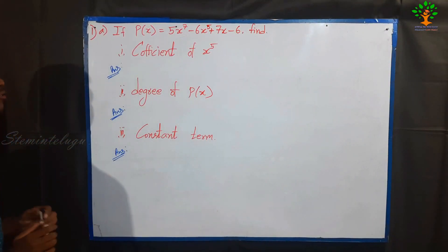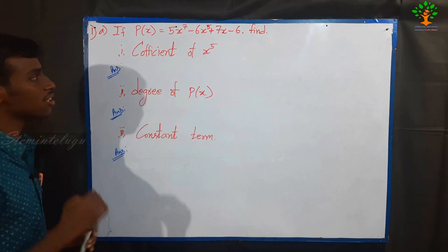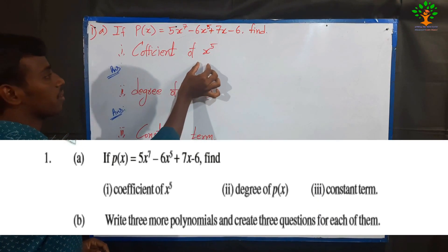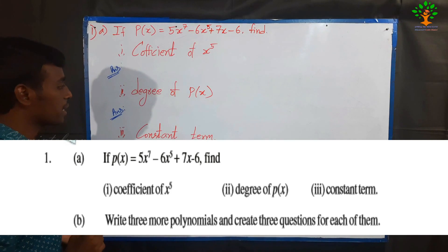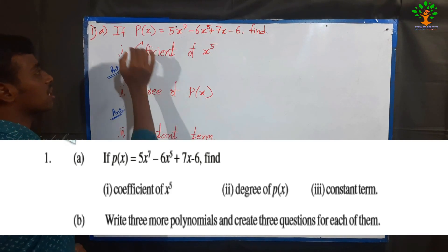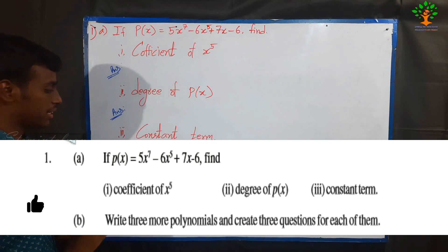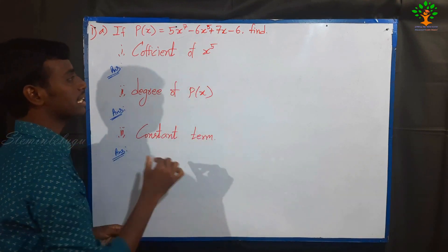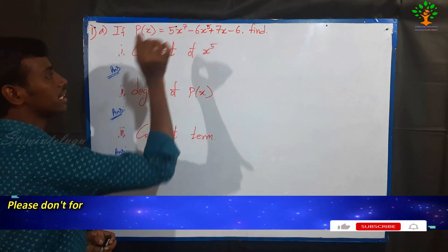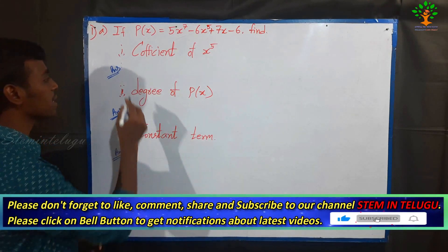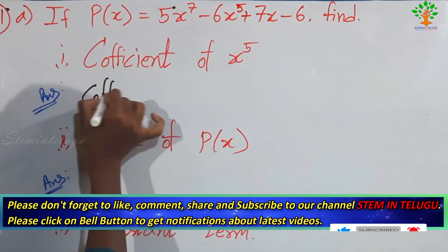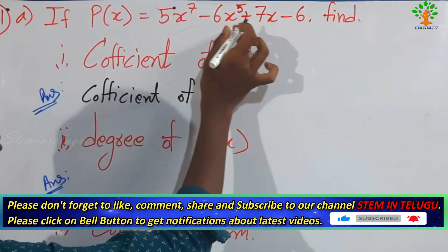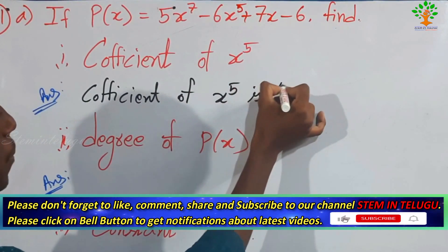What is P of x? P of x is a polynomial. What is the coefficient of x power 5? The coefficient of x power 5 is minus 6.